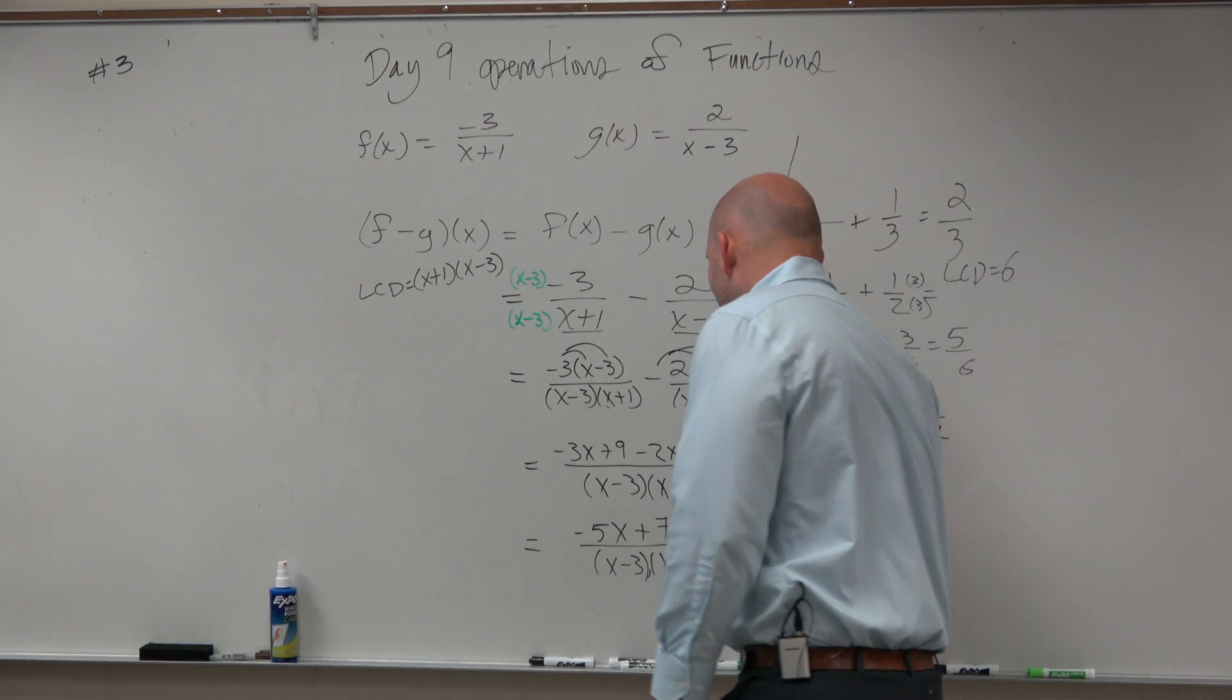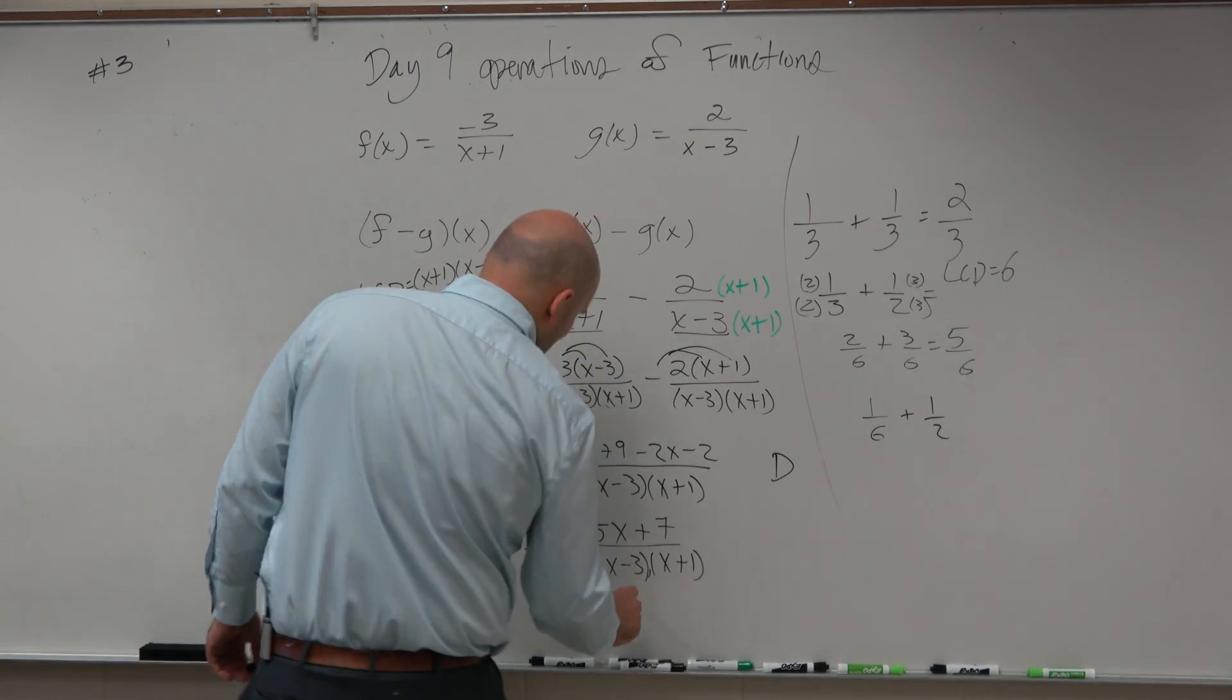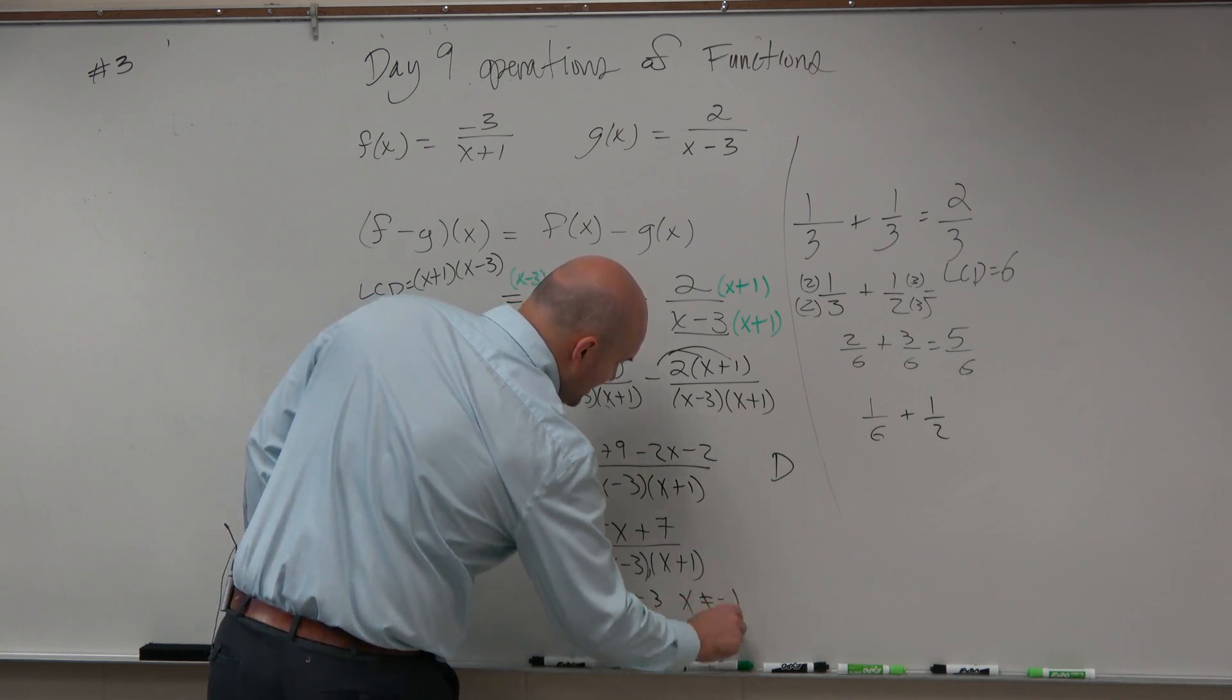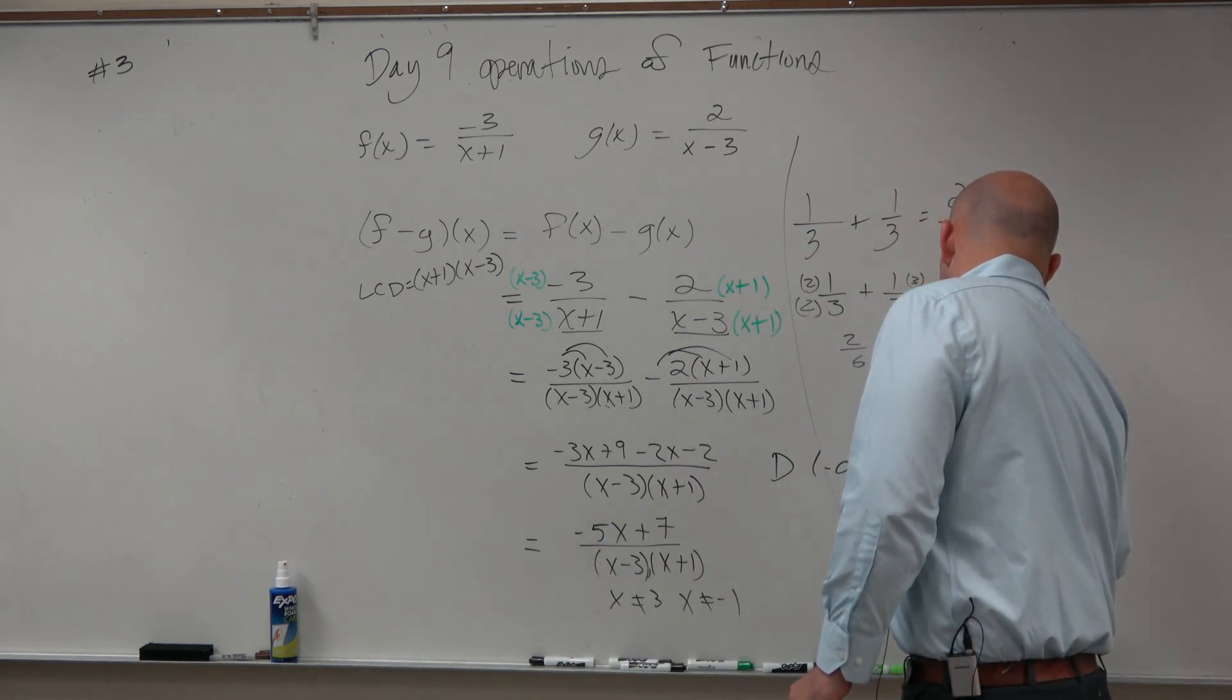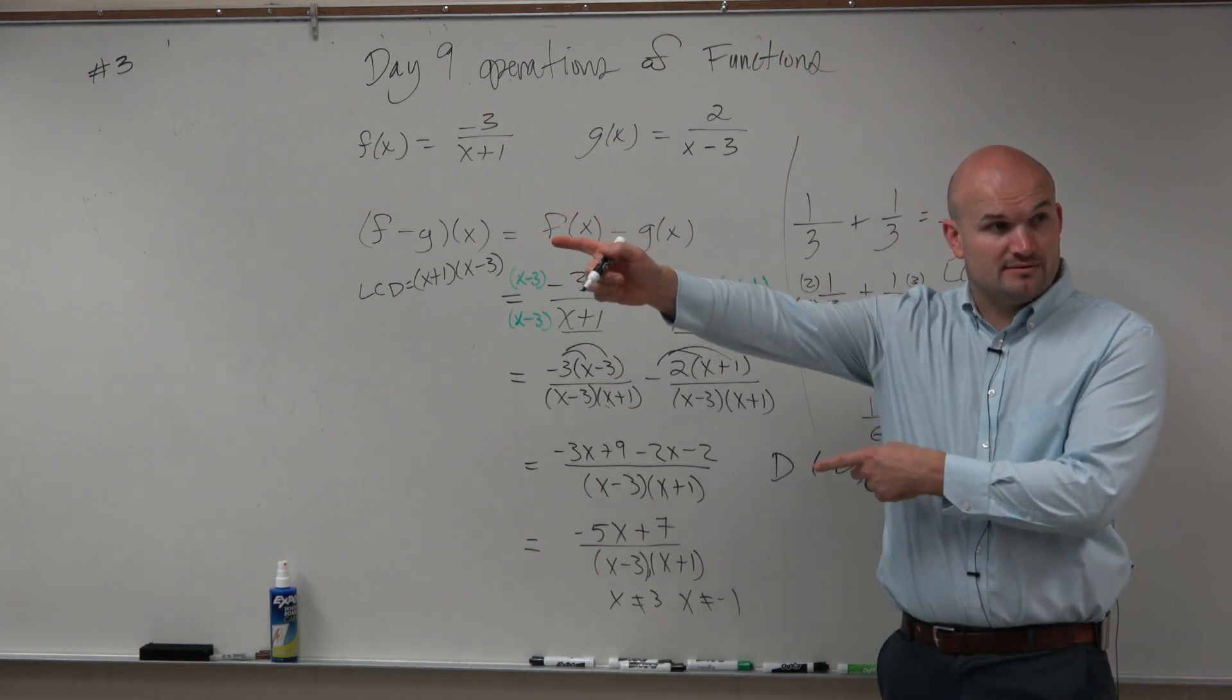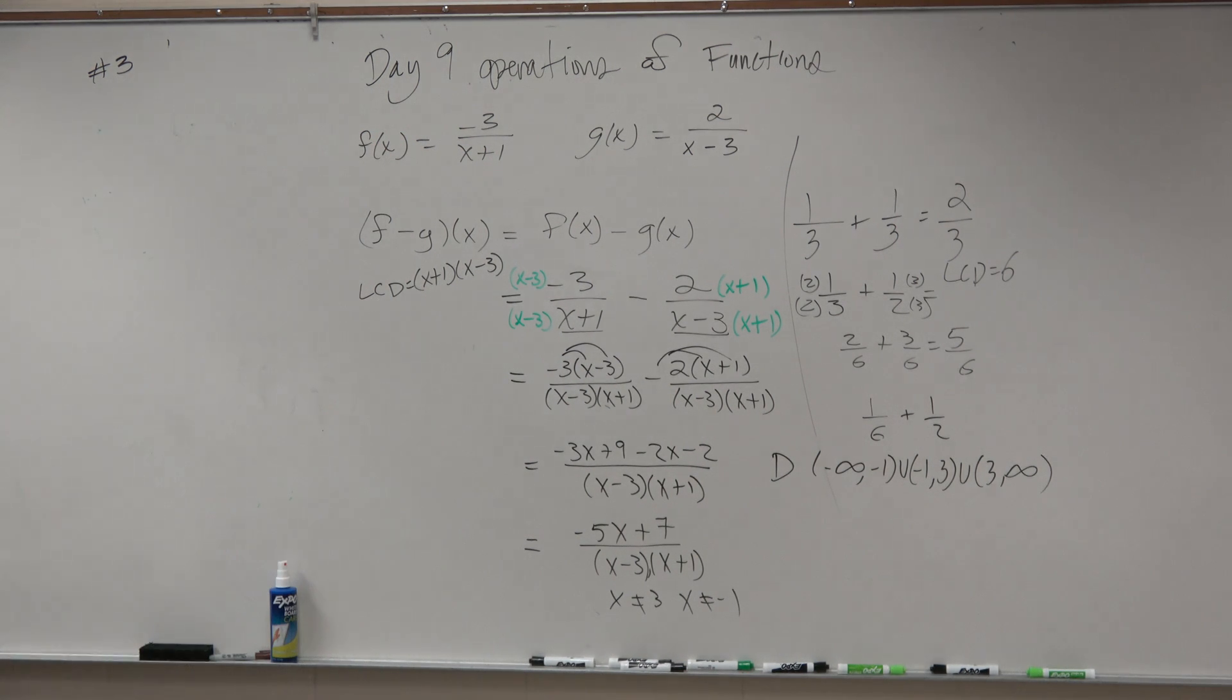So if I wanted to find the domain, I've got to figure out what values are going to make the denominator equal to 0. Well, I can just look by inspection and say x cannot equal 3 and x cannot equal negative 1. So my domain is going to be negative infinity to negative 1, union negative 1 to 3, union 3 to infinity. Just like your homework problem that I did. Kind of the same thing.